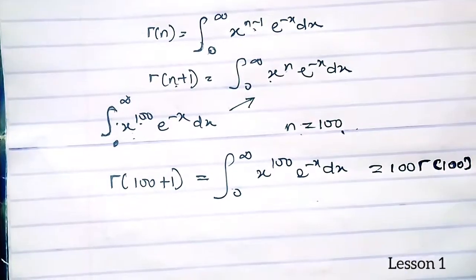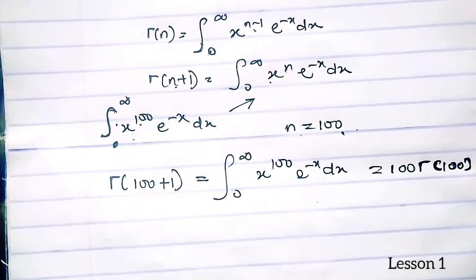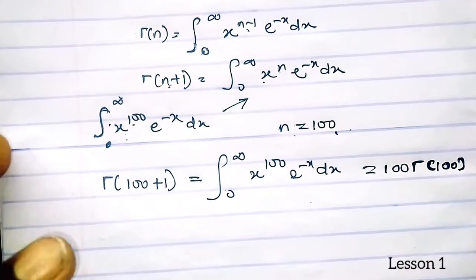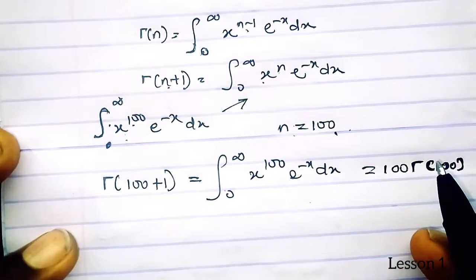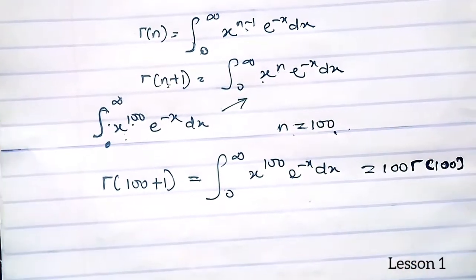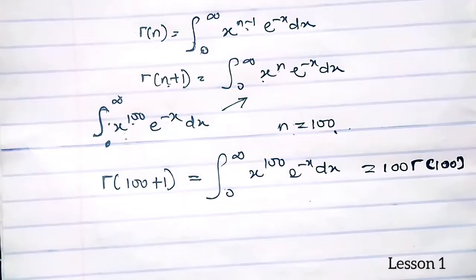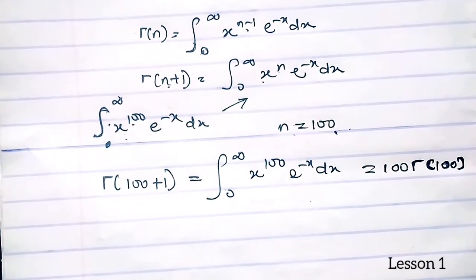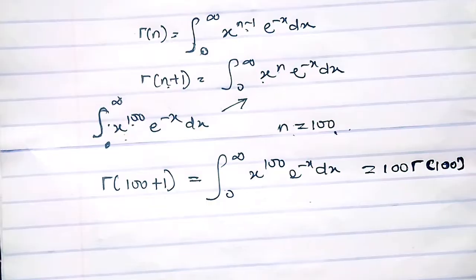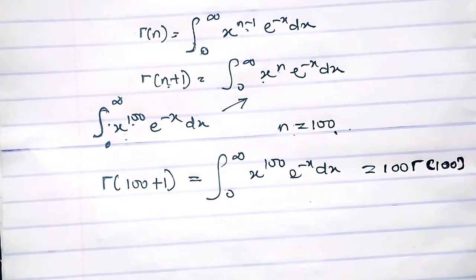At this first stage we can leave our answer as 100 · Γ(100). In the next video we will look at another formula and further solutions for the gamma function, as there are different approaches. Thank you for watching — please subscribe.